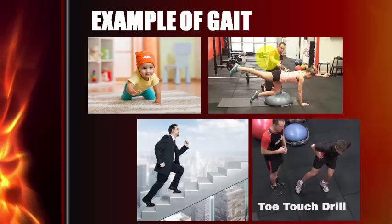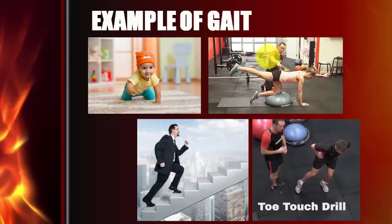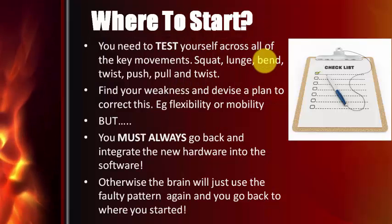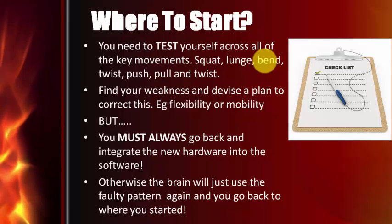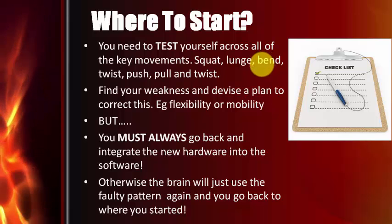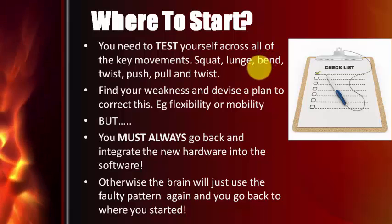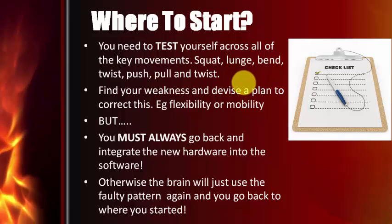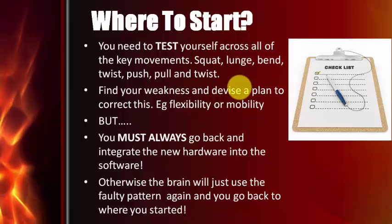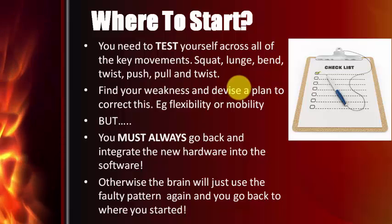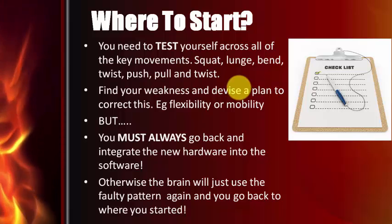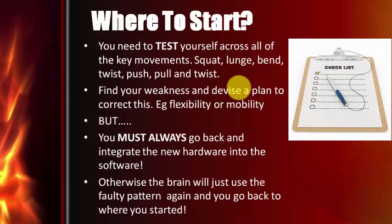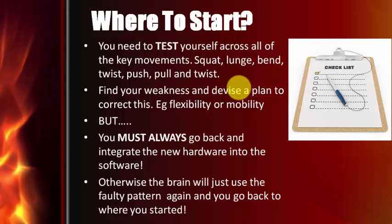So all of these are your foundation patterns, and your program must include exercises from all of them. Where do you start? First, test yourself across all of these patterns, find a weakness within each one, and devise a plan to correct it. If you've got a flexibility or mobility problem, start to correct it. However, you must always go back and integrate the new hardware into the software. Just stretching and strengthening exercises on their own, without integrating back into the pattern of movement, won't change anything. You need to retrain the brain to use this new information within the pattern where you had a weakness, and you'll need to spend a lot of time doing that to make it automatic.